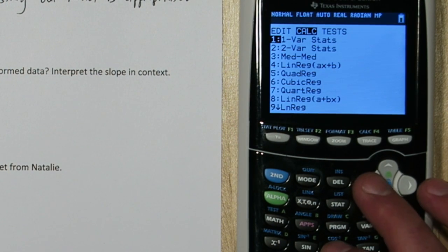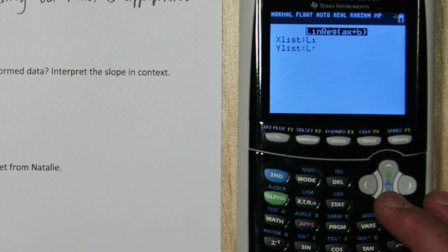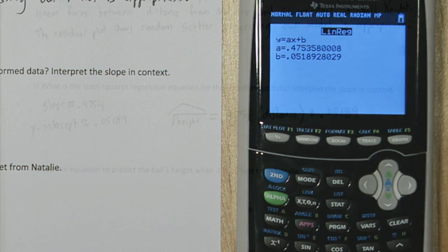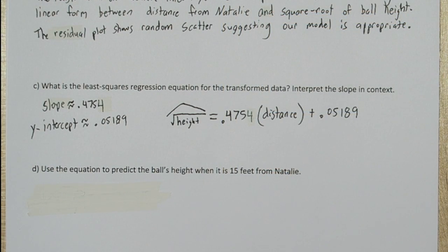Let's rerun the linreg function to get our least squares regression equation. So our slope is approximately 0.4754, and our y-intercept is about 0.05189.